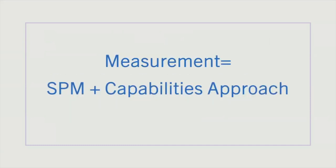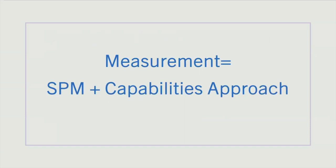To measure poverty, we decided to use the SPM as well as the capabilities approach. We think poverty should be measured by combining a more concrete and metric measurement of poverty, the supplemental poverty measure, with a more abstract and holistic measurement, the capabilities approach.